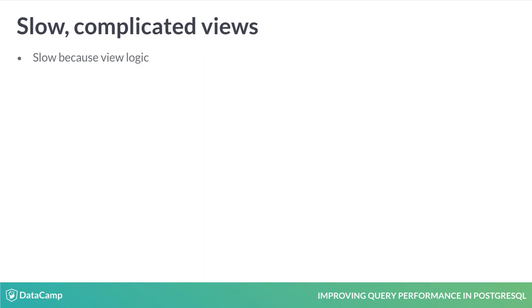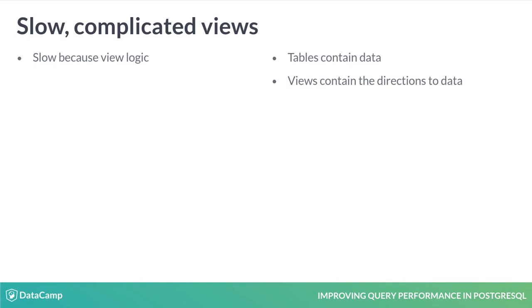Sometimes, base table slowness is because the table is actually a view. Views are similar to tables with one key difference: tables contain materialized data that is available directly, while views contain the directions to data — a view calls an underlying SQL query that runs to populate the results. This is the power of temporary tables: they can materialize a view, bypassing the need to run the underlying SQL query with each reference.